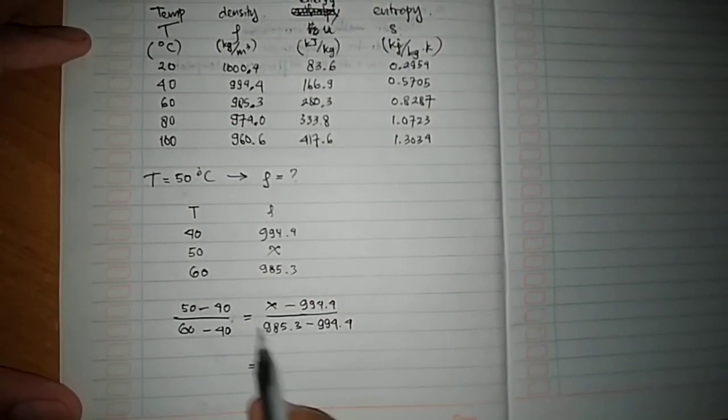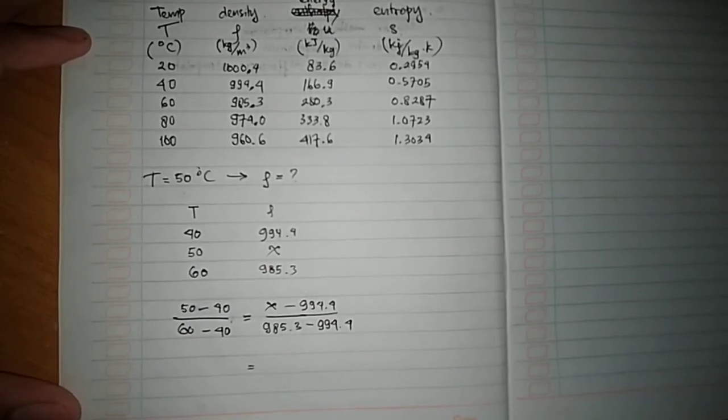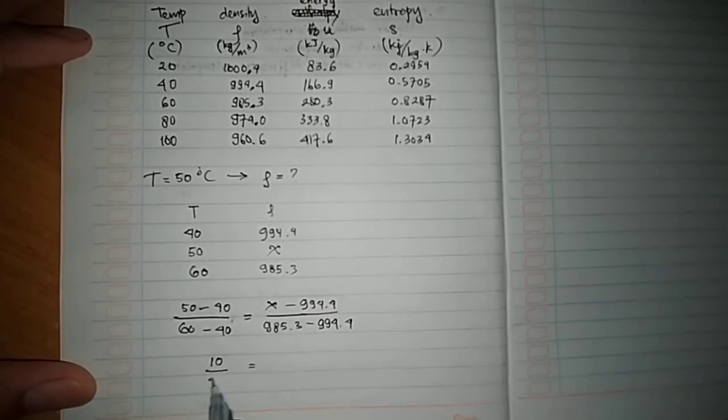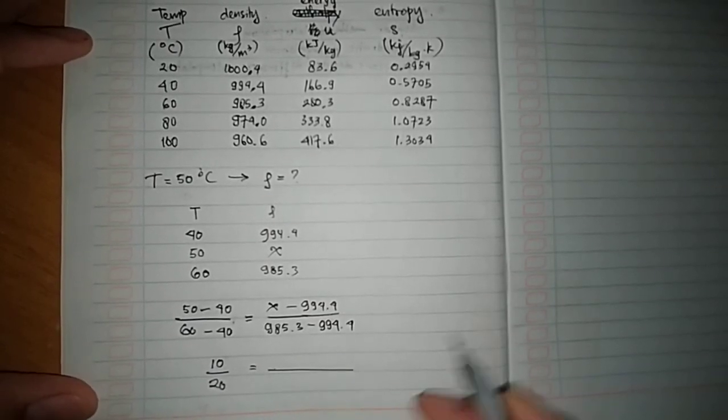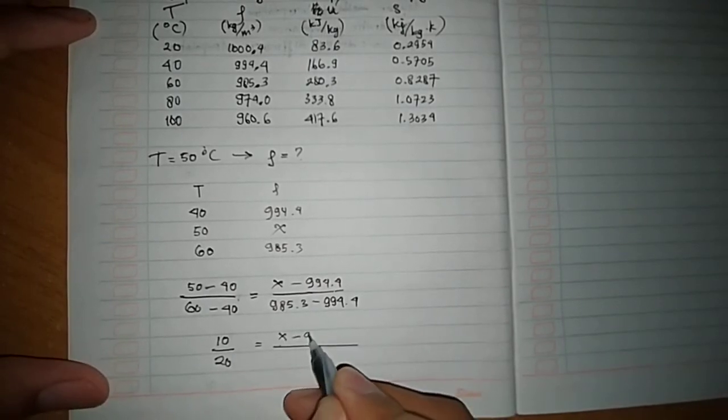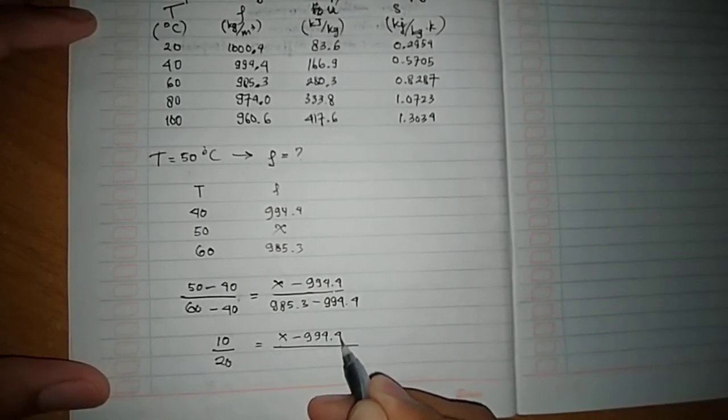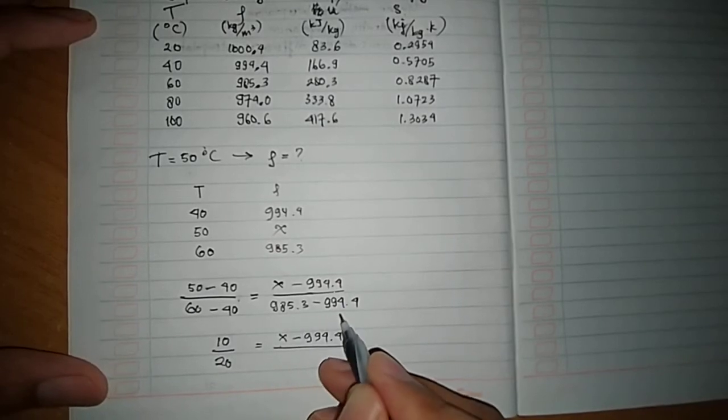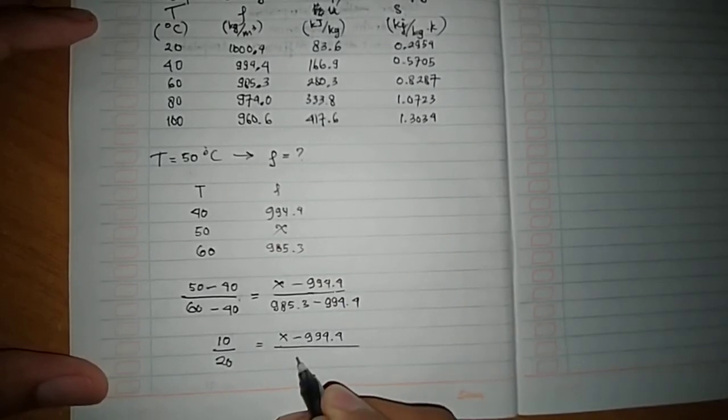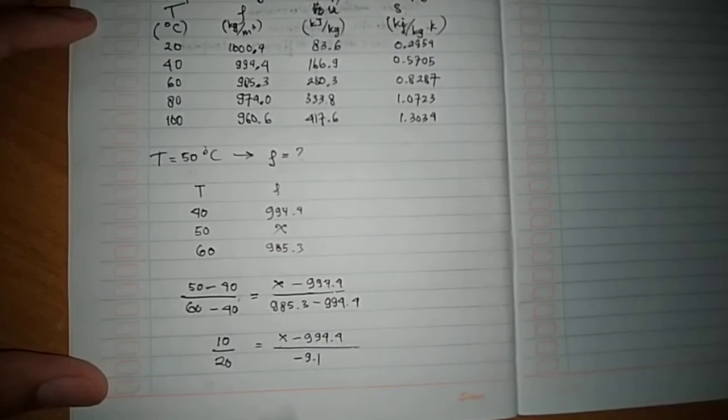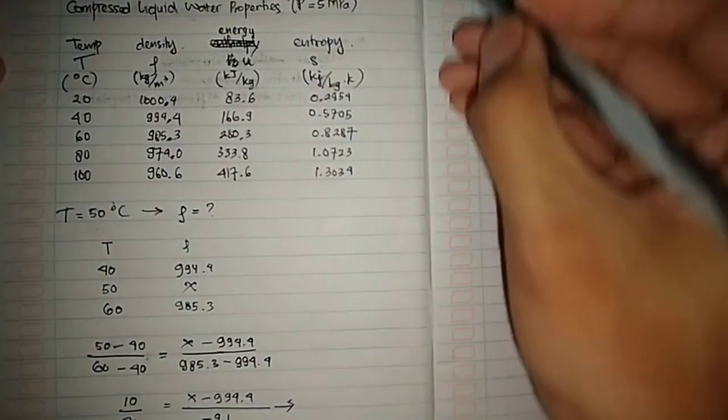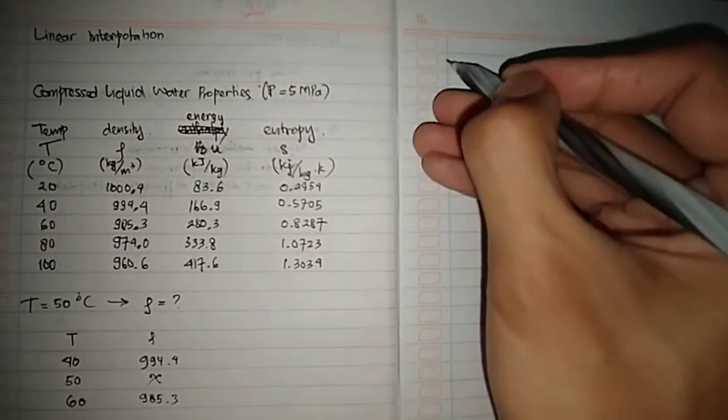So the calculation will be 10 divided by 20. You can use a calculator to do this calculation. This minus this will be equal to minus 21. I will continue to this line. So you do cross multiplication—this multiplied by this and then this multiplied by this.